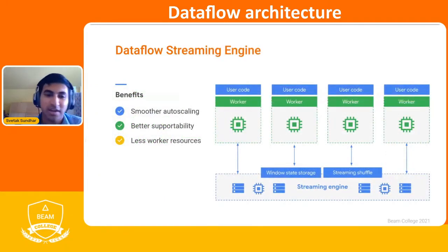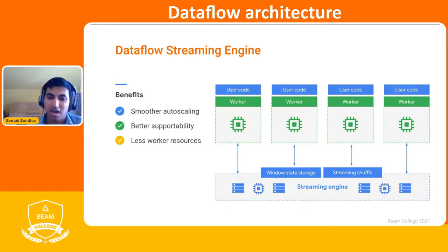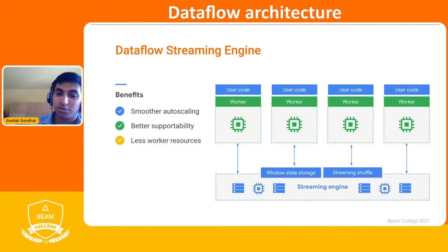Analogously, we have the Dataflow streaming engine for streaming pipelines. Same idea — resource-intensive steps are sent to the streaming engine, which handles the computation and sends it back so your pipeline keeps progressing. This helps with three key things: autoscaling, reduced worker resource requirements, and smoother autoscaling overall.